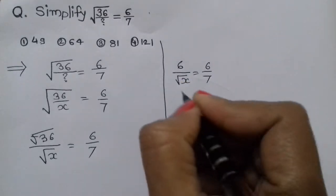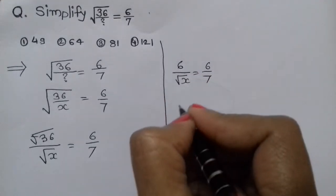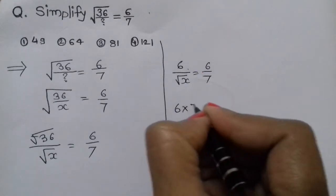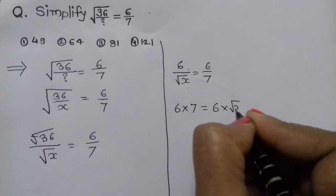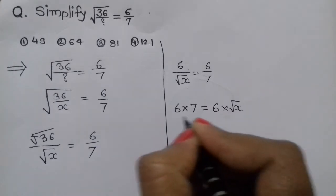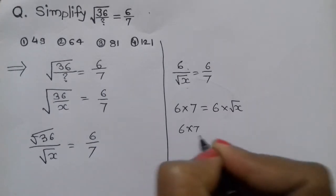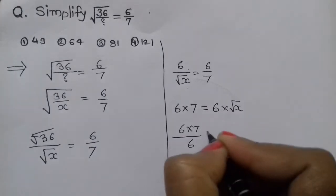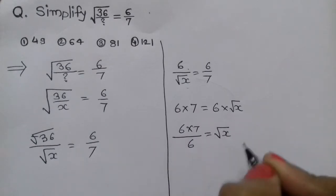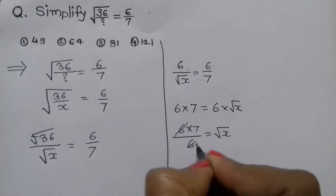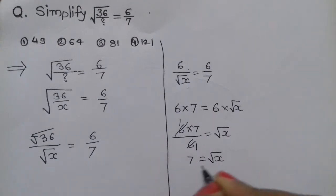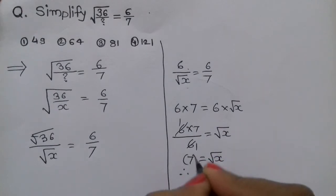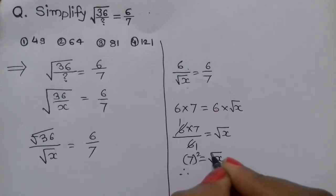Cross-multiplying: 6 × 7 = 6 × √x. Dividing both sides by 6, the 6s cancel, giving 7 = √x. Now square both sides: 7² = (√x)².